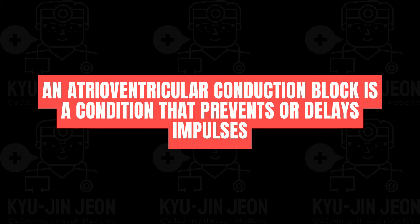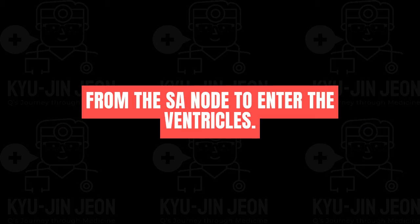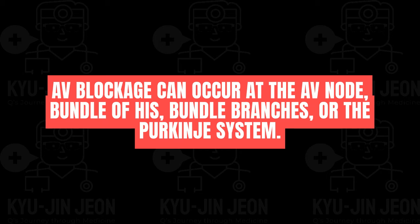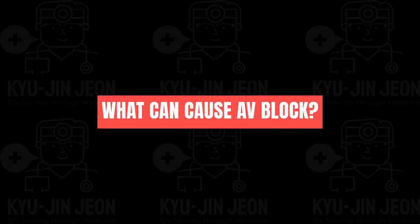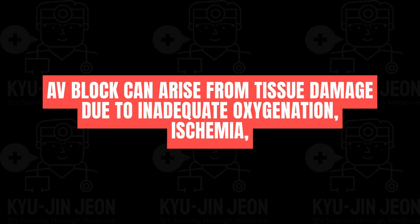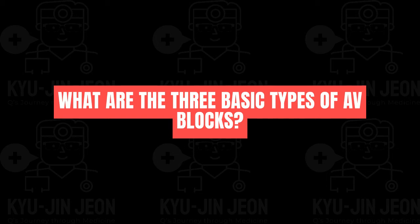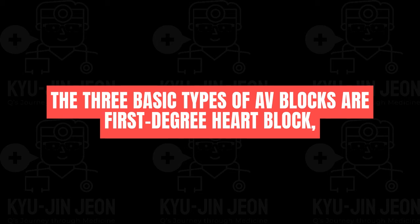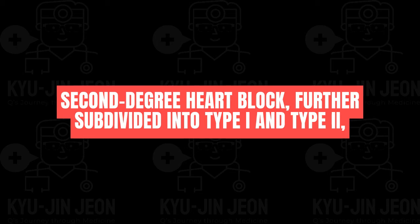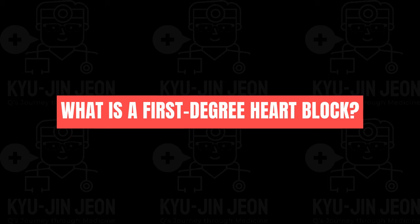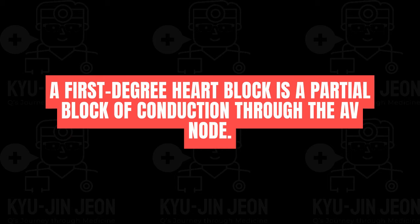An atrioventricular conduction block prevents or delays SA node impulses from entering the ventricles, and can occur at the AV node, bundle of His, bundle branches, or Purkinje system. Causes include ischemia, physical damage, inflammation, or extreme vagal nerve activity. The three types are first-degree (partial AV node block), second-degree type 1 and type 2, and third-degree (complete block), where the impulse is completely blocked either through the AV node or bundle of His.